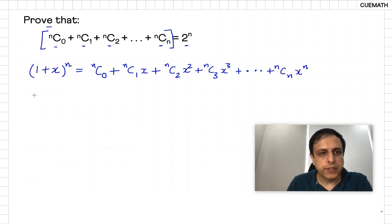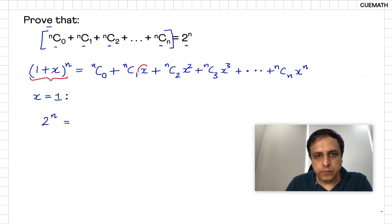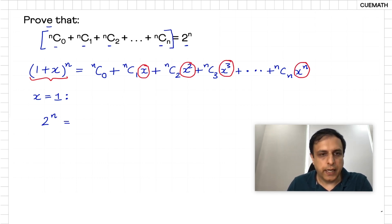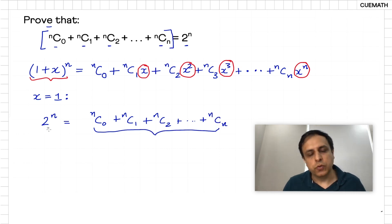Now all we need to do is substitute X equal to 1 into this expanded equality. On the left side, substituting X equal to 1 gives us 2 to the power N. On the right side, X, X squared, X cubed, and X to the power N all become 1, and so we simply get NC0 plus NC1 plus NC2 all the way up to NCN. This proves that the sum of the binomial coefficients is equal to 2 to the power N.